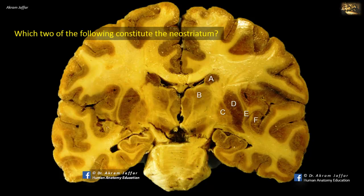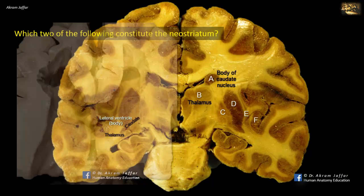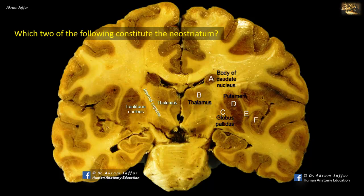Which two of the following constitute the neostriatum? This is a coronal section through the body of the lateral ventricle showing some gray masses. A is the body of the caudate nucleus, which forms a ridge along the lateral border of the floor of the central part of the lateral ventricle. This ridge is just lateral to the thalamus B. The internal capsule, a massive fiber bundle of projection fibers, separates the thalamus B from the gray matter of the lentiform nucleus comprising C and D. The lentiform nucleus has a lateral part D called the putamen and a medial part C called the globus pallidus.